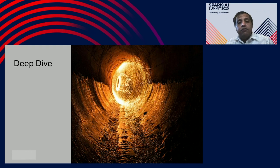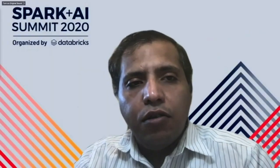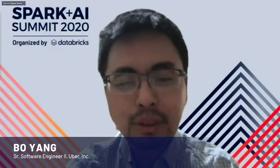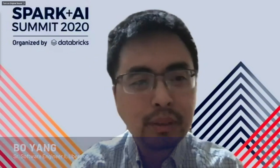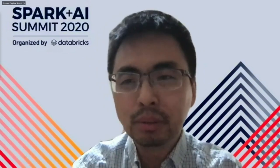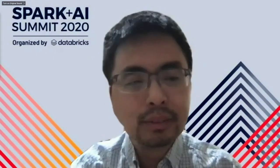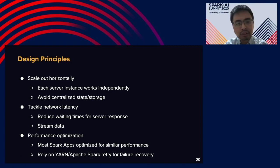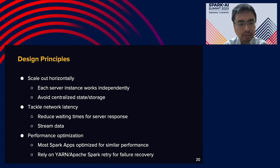Our colleague Bo will now take over for a deep dive. Thank you Mayang. Hey everyone, my name is Bo. I work in data infrastructure at Uber. I'll go through some details about how we designed and implemented the remote shuffle service. We did a lot of experiments and iterations, and summarized our design principles as follows. The first principle is to scale out horizontally — with thousands of machines in the cluster and many Spark executors, we need the whole system to scale out easily.